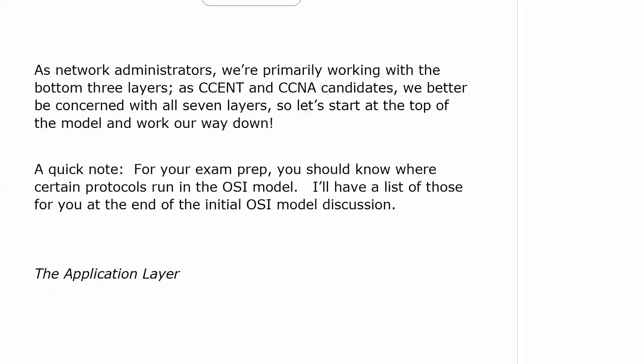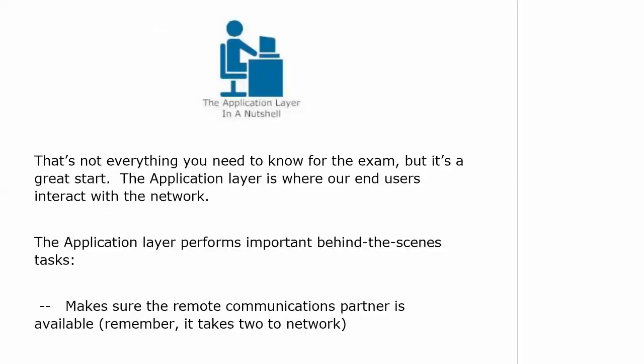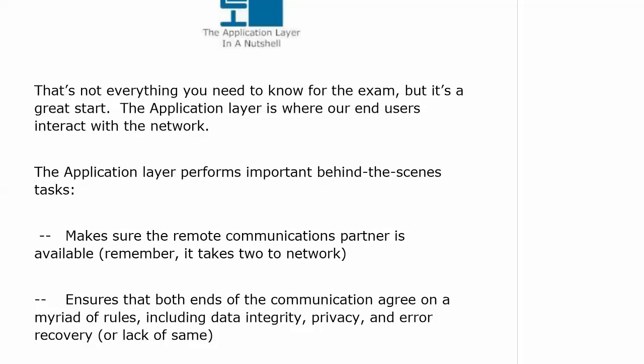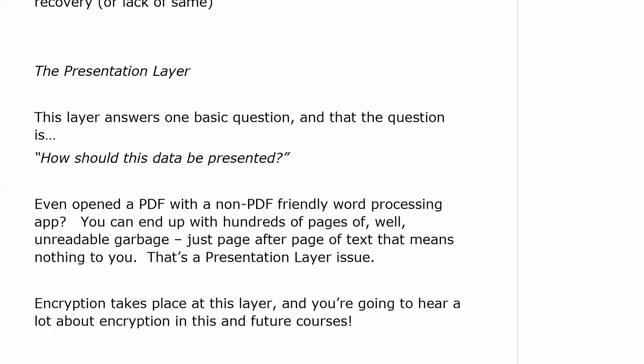Let's look at the application layer to begin with. That diagram is the application layer in a nutshell — it is where our end users interact with the network. But the application layer also performs important behind-the-scenes tasks. It makes sure the remote communications partner is available to begin with — it takes two to network, you can't network by yourself. It also ensures both ends of the communication agree on a myriad of rules, including data integrity, privacy, and error recovery or lack of same.